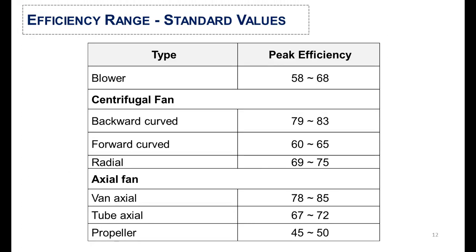Once we have calculated the efficiency of the fan or blower, we will cross-check it with standard values. For blowers, the peak efficiency value is from 58 to 68%. For centrifugal fans it varies from 60 to 83%, and for axial fans it varies from 45 to 85% according to their impeller design.